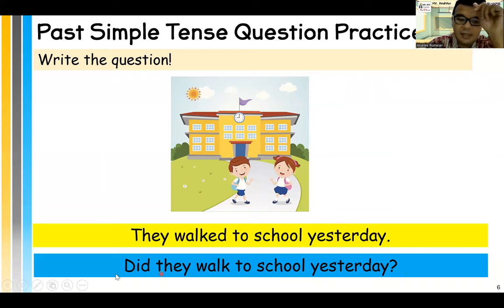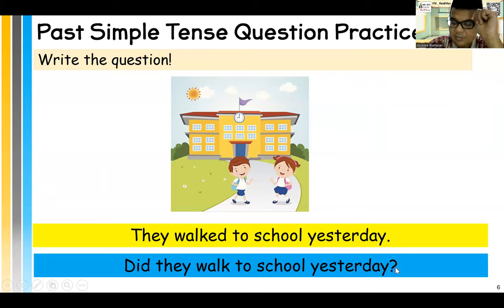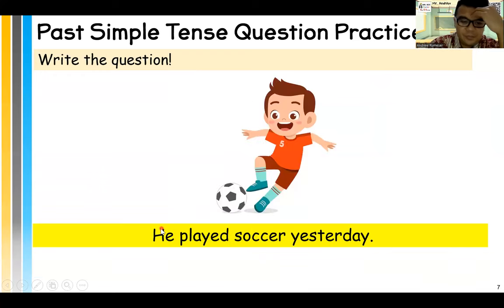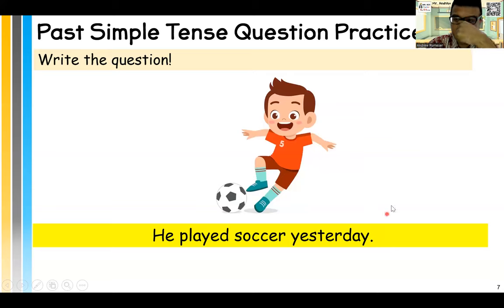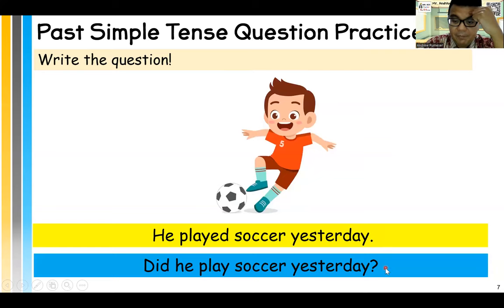Did — first — they — walk — no -ed — to school yesterday. Why no -ed? Because there's a did. Question mark because it's a question, not a full stop. Now you do it. What is the question if the answer is: he played soccer yesterday? Pause the video if you need more time. Did he play — no -ed — soccer yesterday? Question mark. Did he play soccer yesterday.